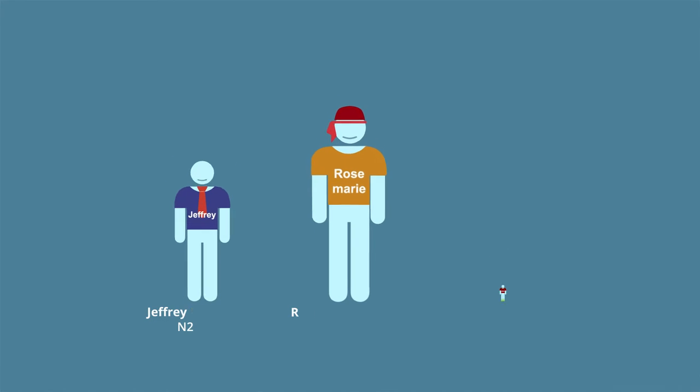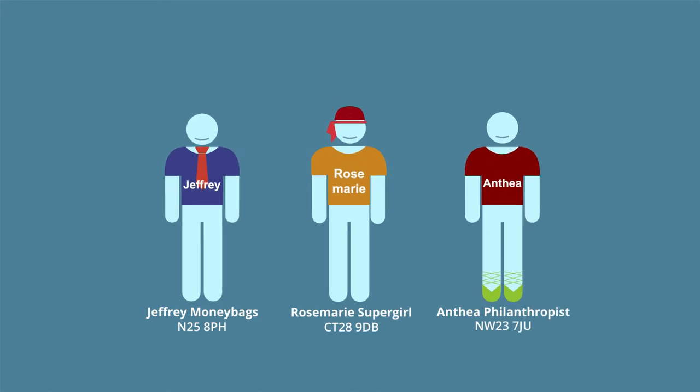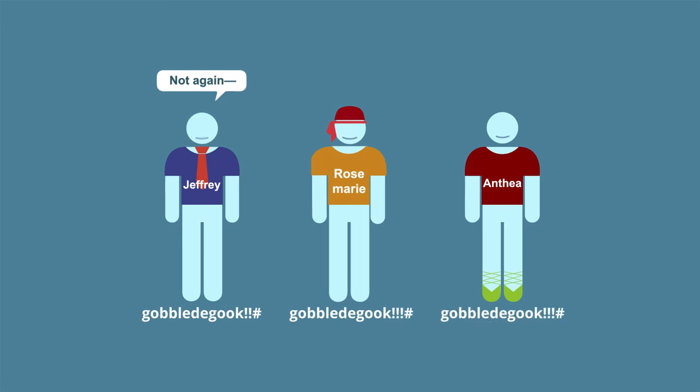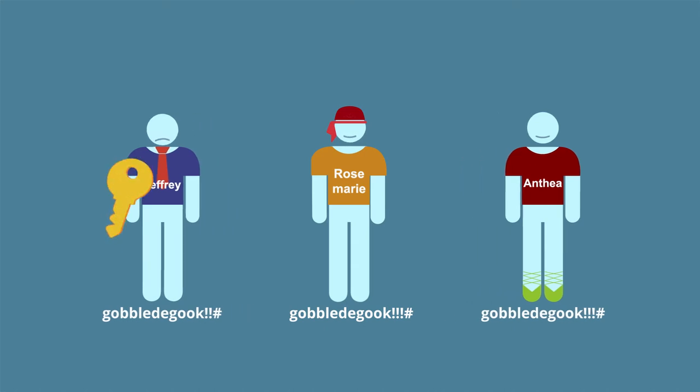One solution is to use what are called pseudonyms or replacement identifiers, which don't reveal a patient's real-world identity. A key is always kept in the data so it can be unlocked.